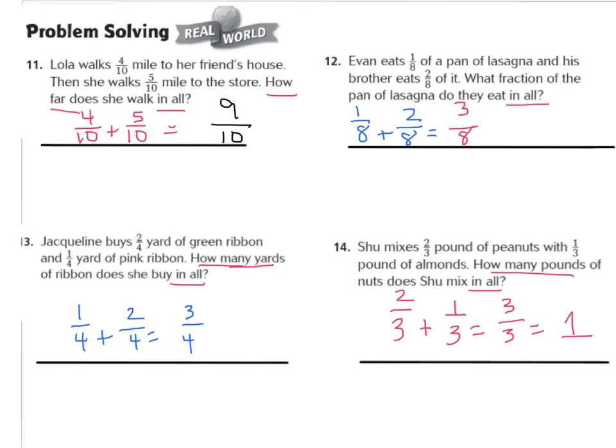Okay, boys and girls, for this one, you should have said that Lola walks 4/10 of a mile to her friend's house, then she walks 5/10 miles to the store. All together, she walks 9/10 of a mile. For number 12, Evan eats 1/8 of a pan of lasagna, and that means to add, his brother eats 2/8 of it. What fraction do they eat in all? Would be 3/8 of the pan of lasagna.